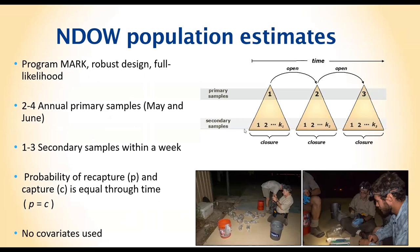The mark-recapture method involves going out at least twice within a year — typically May and June — marking animals and analyzing them assuming a closed population during that time. The data is run through a program called Program MARK, which produces population estimates with upper and lower ranges for each of the four parcels.